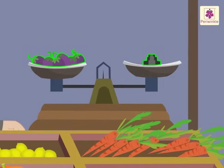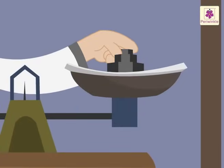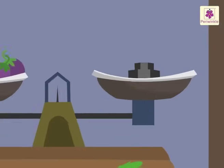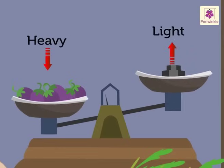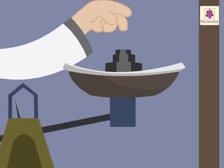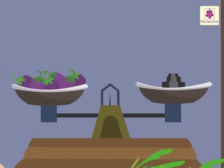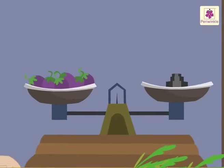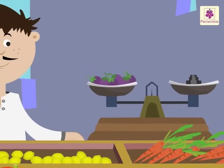When we compare the weight of two objects, one object can either be heavier or lighter than the other, or both can weigh the same. Let's understand this in a better way with the help of the weighing scale.